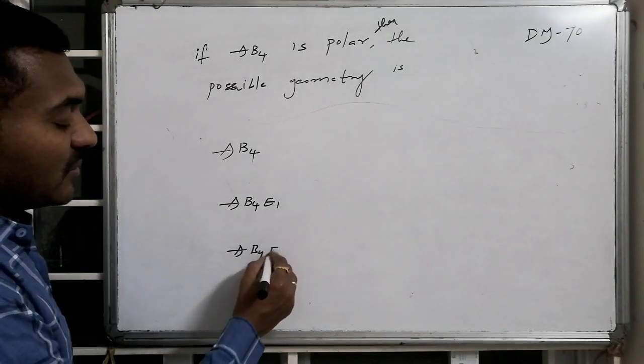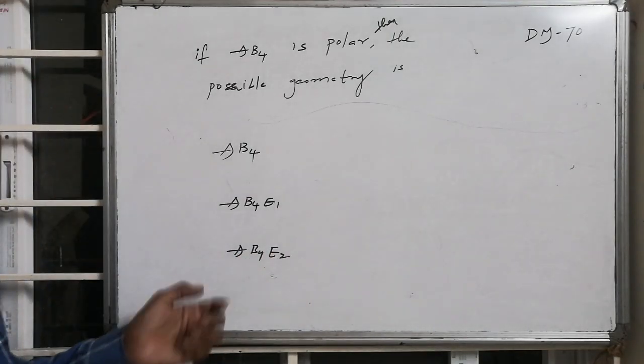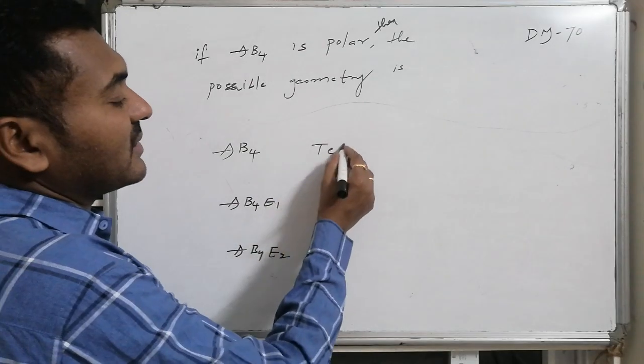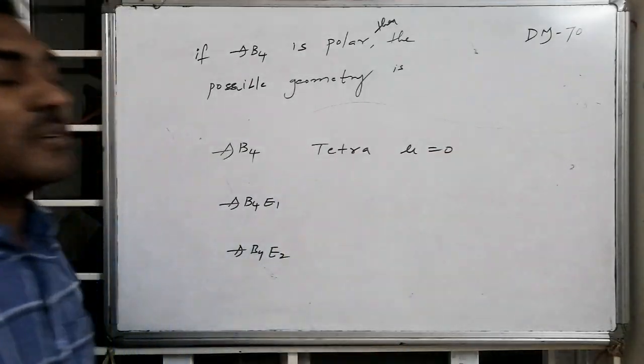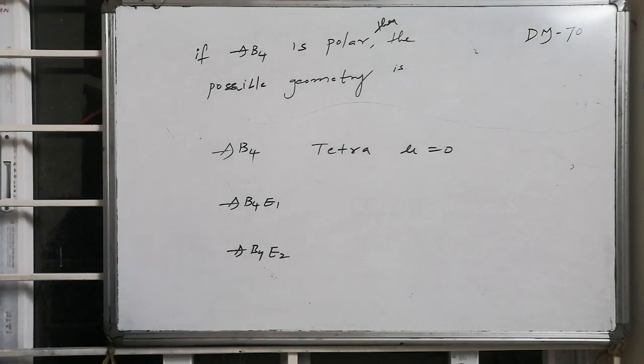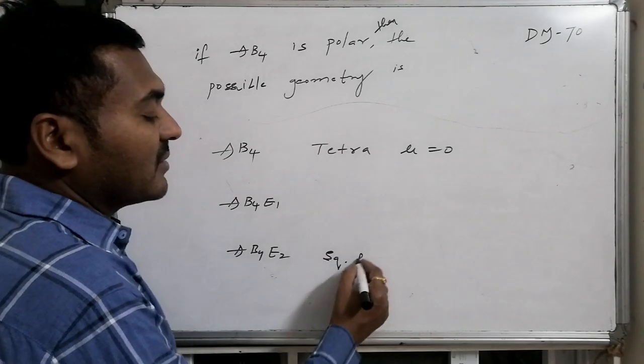AB4 followed by E2. If it is AB4, this is regular tetrahedral geometry, hence it is non-polar and mu equals zero. If it is AB4E2, then it is square planar with